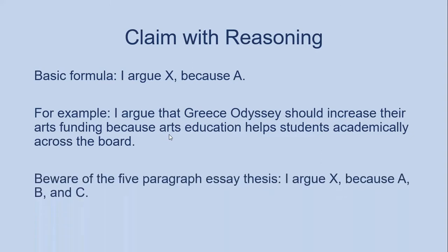One thing you do want to avoid with this is what we call the five paragraph essay thesis. I do have another video on the five paragraph essay and why it's such a problem, but basically the five paragraph essay thesis would be 'I argue X because A, B, and C.' The problem is that when you have A, B, and C as distinct and disconnected reasons, the structure of the essay becomes much more disjointed, which is a huge problem in itself.